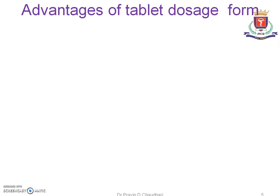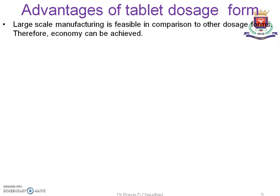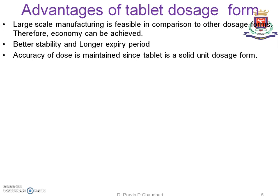We will see the advantages and disadvantages of tablet dosage form. First, advantages: large scale manufacturing is feasible in comparison to other dosage forms, therefore economy can be achieved. Better stability and longer expiry period since it is a solid unit dosage form. Accuracy of dose is maintained since tablet is a solid unit dosage form.